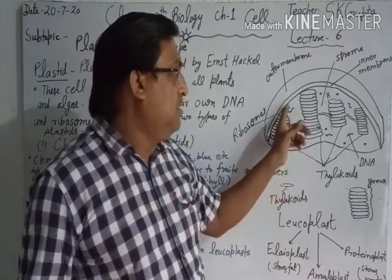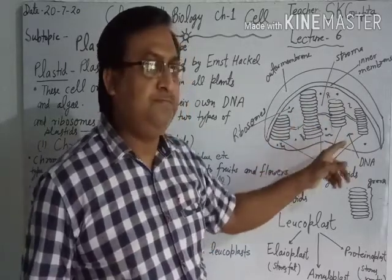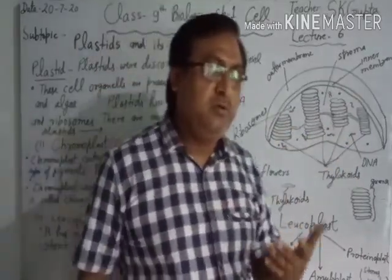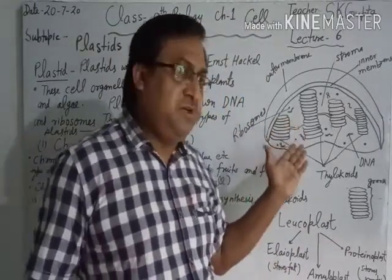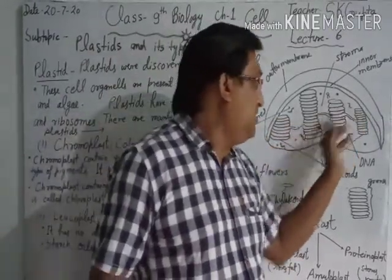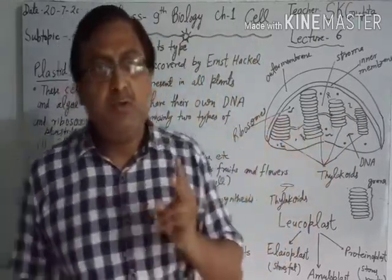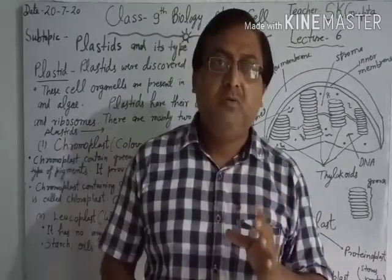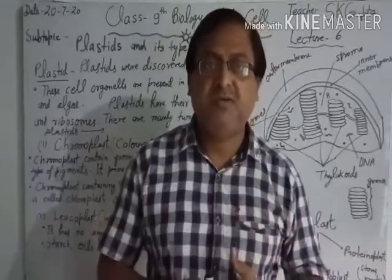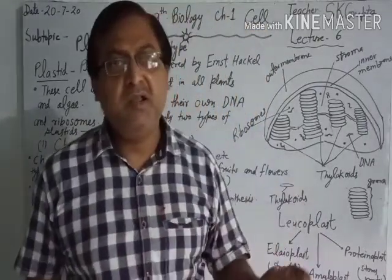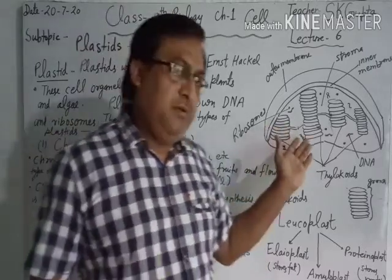You can see the dot points here — these are ribosomes present inside the chloroplast, and this is DNA. So there are only two cell organelles which are autonomous in the cell, that is mitochondria and chloroplast, both of which have their own DNA and ribosomes.